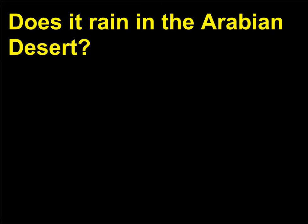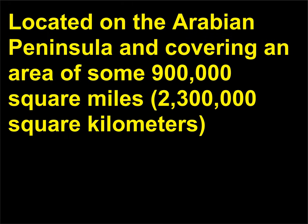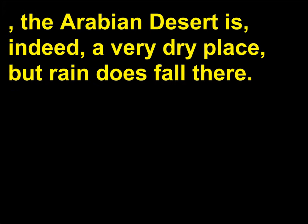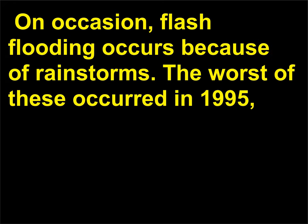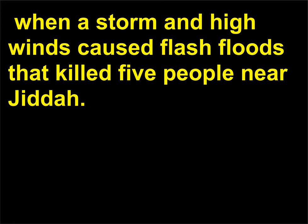Does it rain in the Arabian Desert? Located on the Arabian Peninsula and covering an area of some 900,000 square miles (2,300,000 square kilometers), the Arabian Desert is indeed a very dry place, but rain does fall there. Some parts receive an average annual rainfall of a mere 1.38 inches (35 millimeters). On occasion, flash flooding occurs because of rainstorms — the worst occurred in 1995 when a storm and high winds caused flash floods that killed 5 people near Jutta.